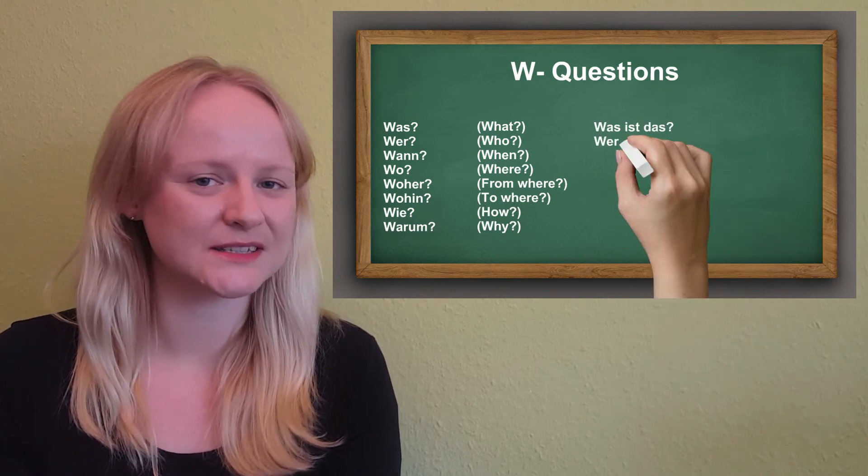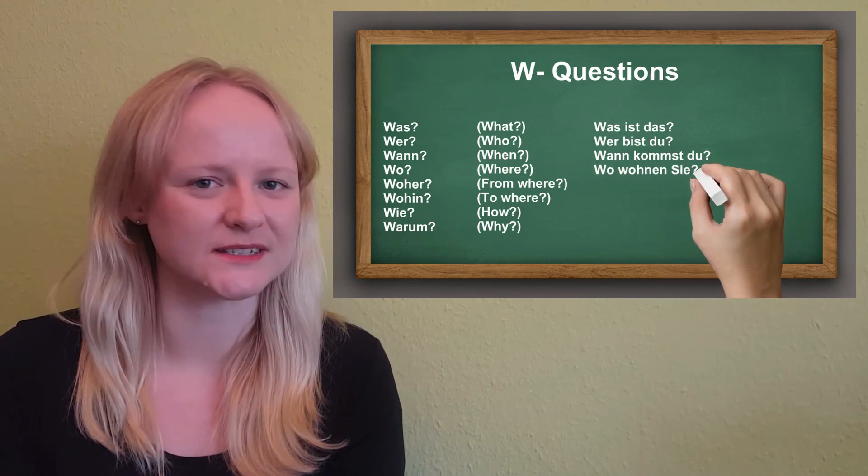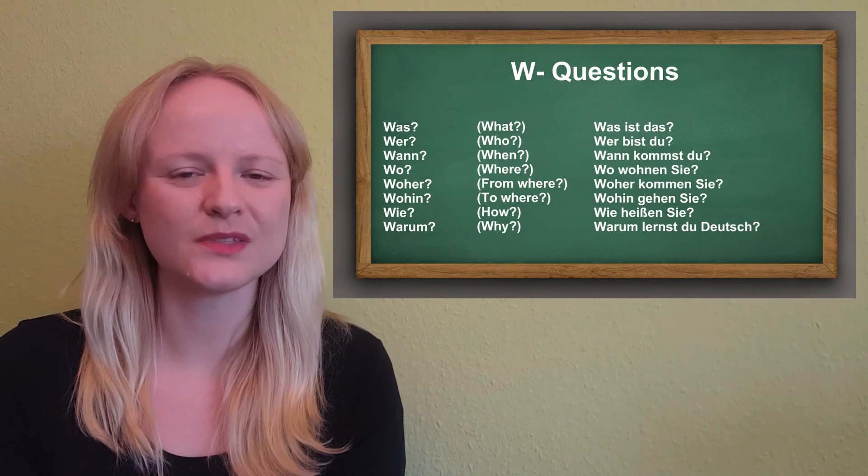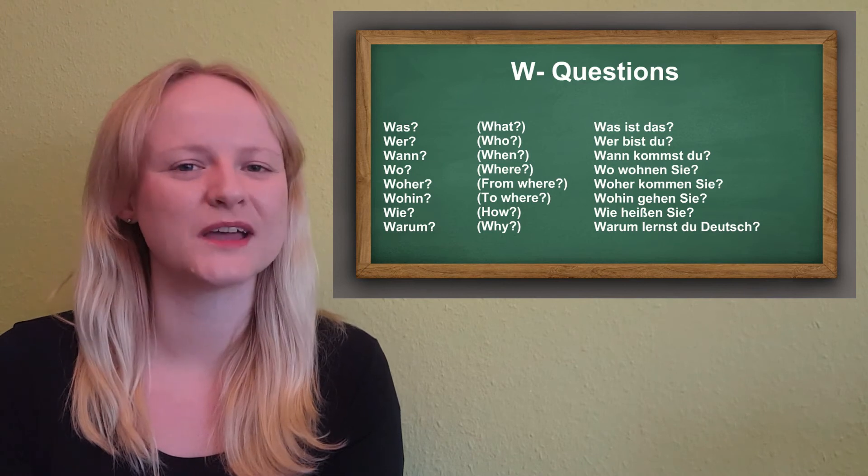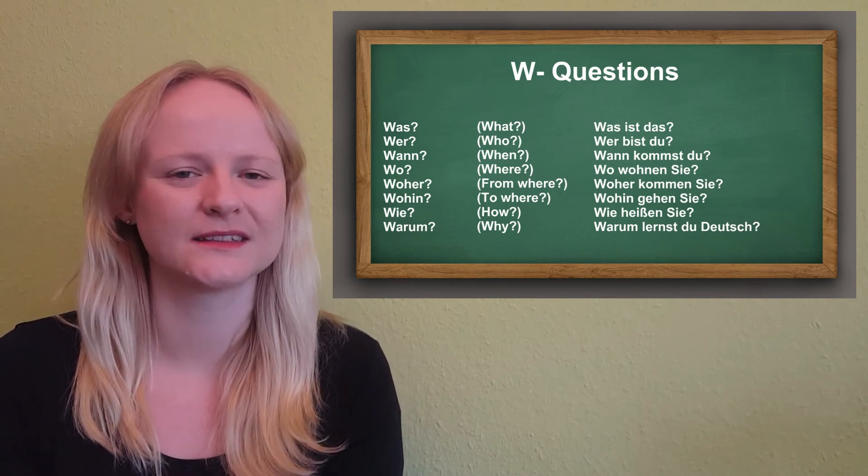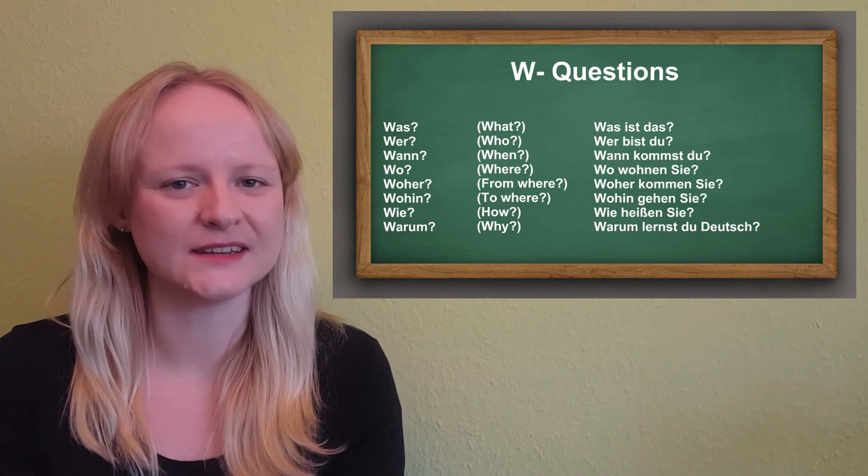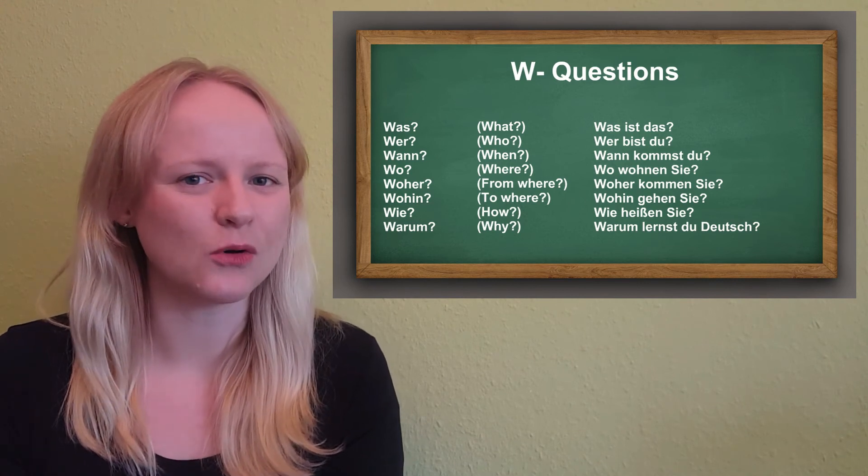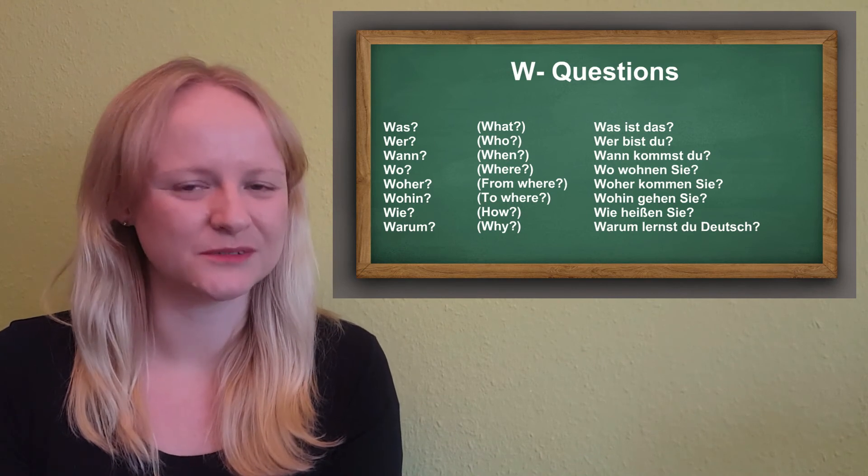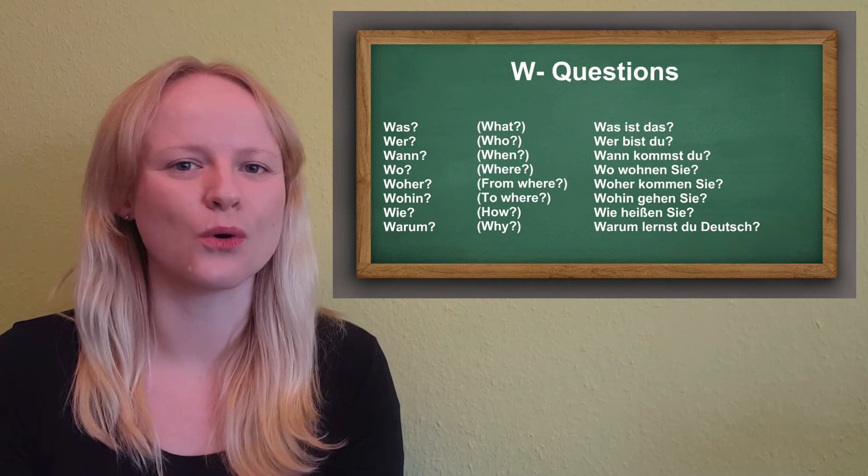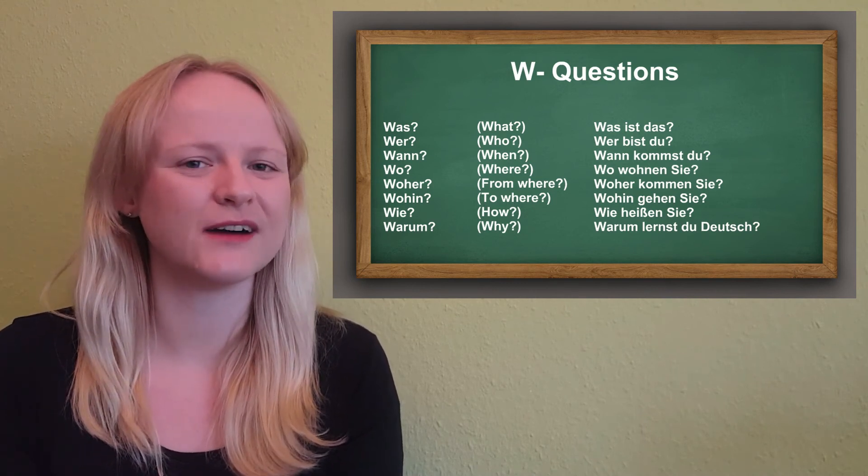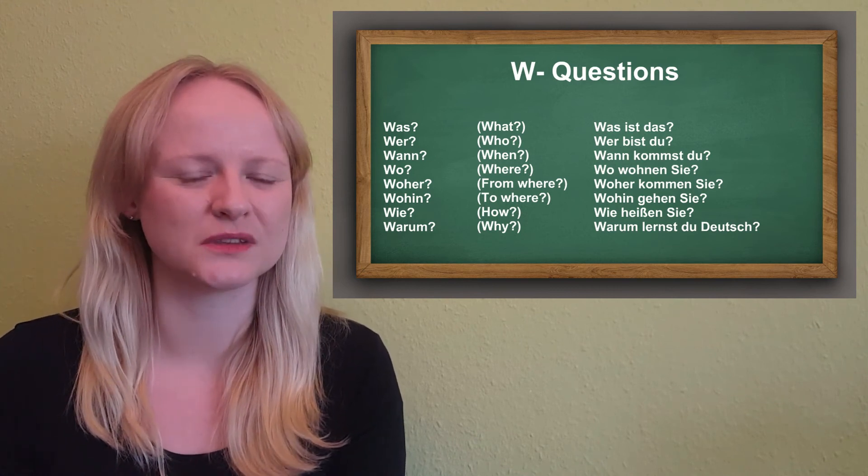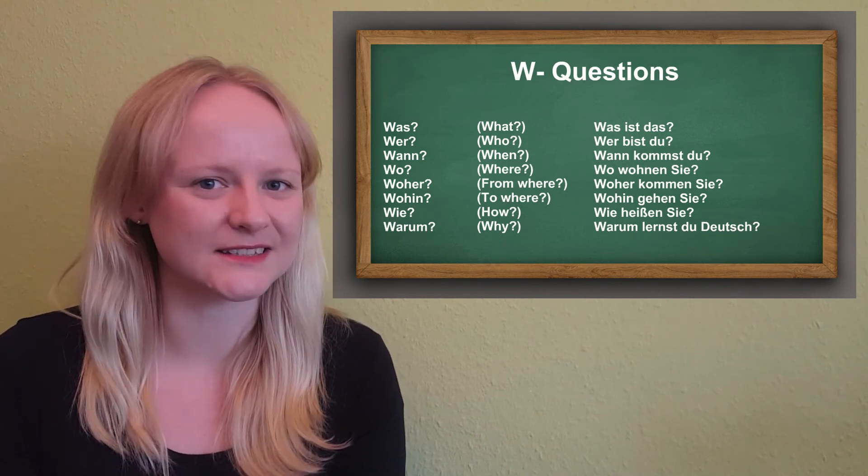Adding some example sentences to illustrate this, we can say: Was ist das? What is that? Wer bist du? Who are you? Wann kommst du? When will you come? Wo wohnen sie? Where do you live? Woher kommen sie? Where do you come from? Wohin gehen sie? Where are you going? Wie heißen sie? What's your name? Warum lernst du Deutsch? Why are you studying German? To use it in a question, you do the same as for yes-no questions. You invert subject and verb, and then you put the question word right in the beginning of the sentence. Easy, right?